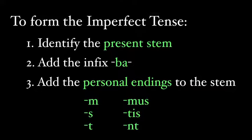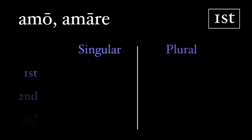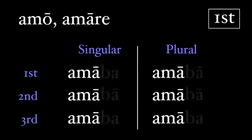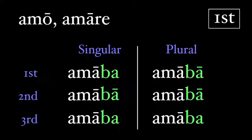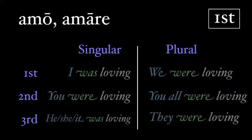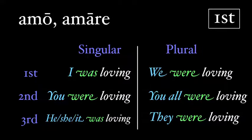Remember that the 'm' is an alternate ending for the first person form. So for the first conjugation — 'amo, amare' — we take the present stem 'ama', add our infix 'ba' to all forms, and then our endings. We get: amabam, amabas, amabat, amabamus, amabatis, and amabant. Translating them: I was loving, you were loving, he/she/it was loving, we were loving, you all were loving, and they were loving.